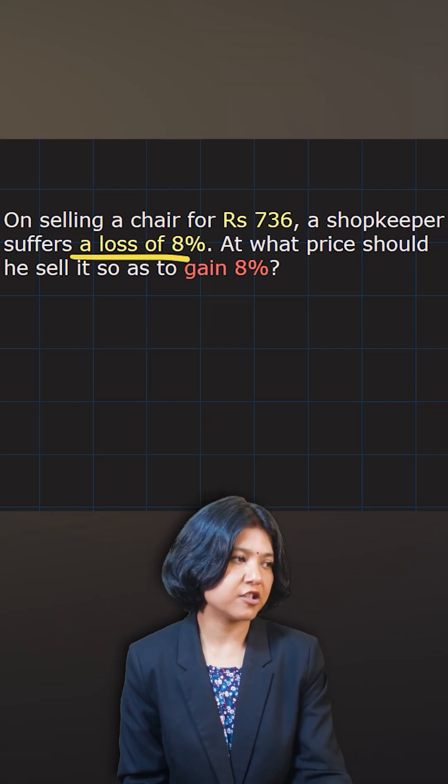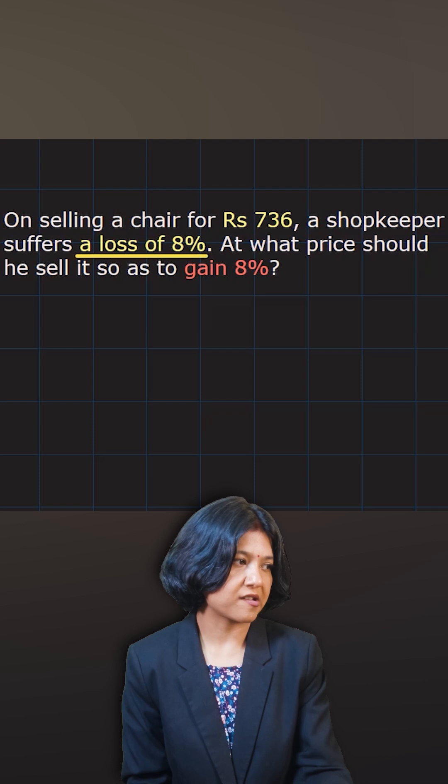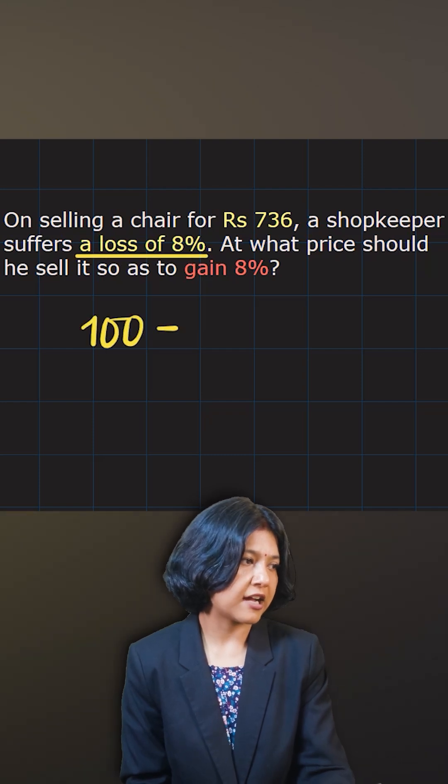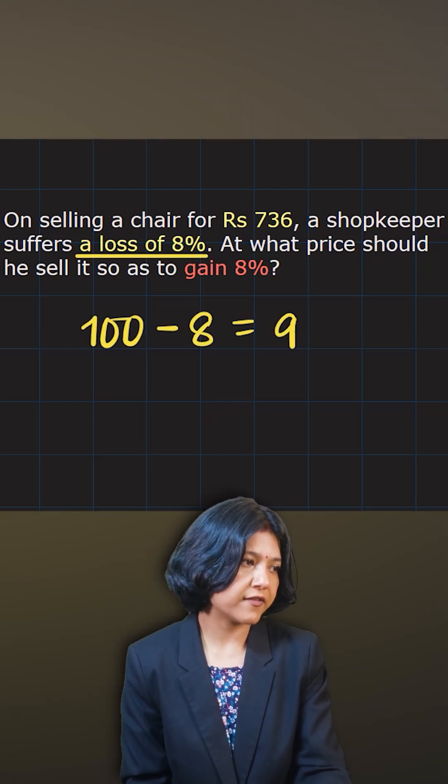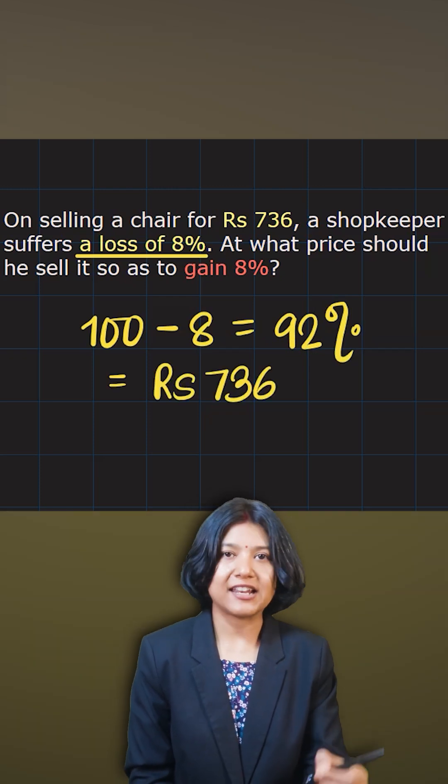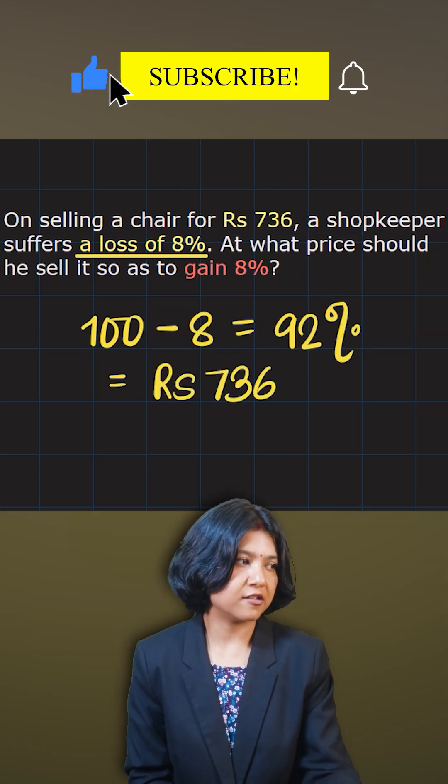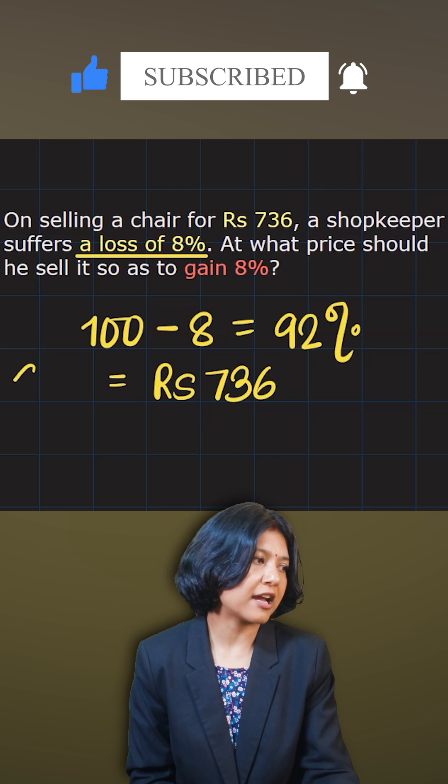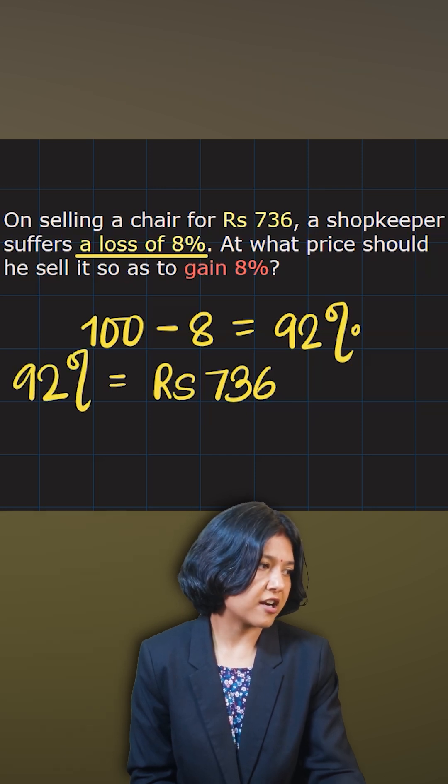A loss of 8% has been given to you. When you're losing 8%, remember you always lose from 100%. So 100 minus 8, the answer is 92%. So the given price actually represents 92% because on selling for 736 rupees, the loss is 8%.